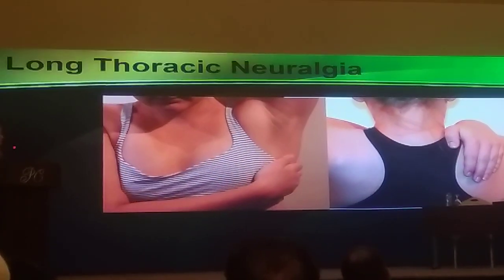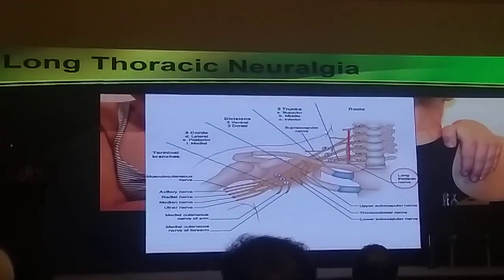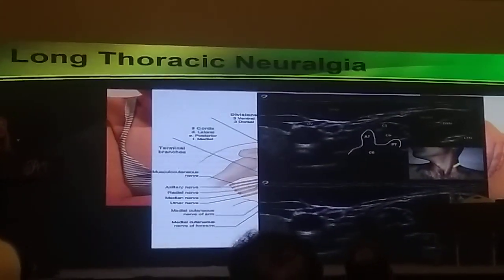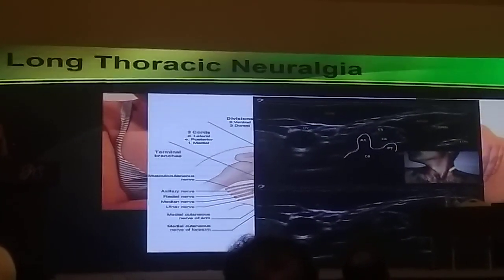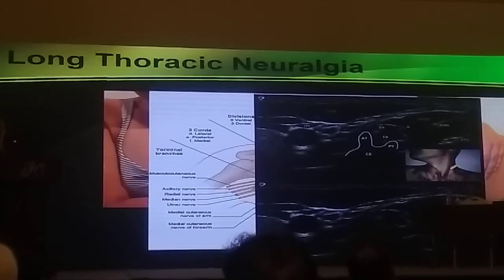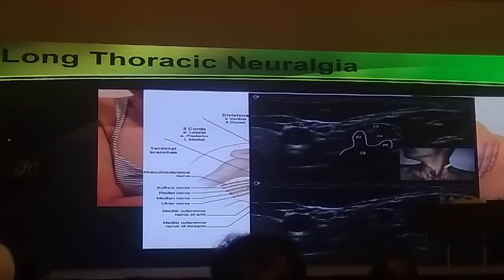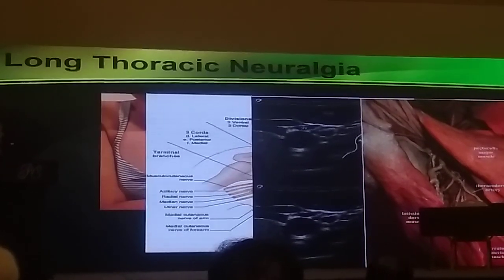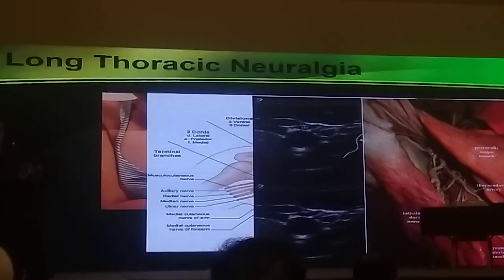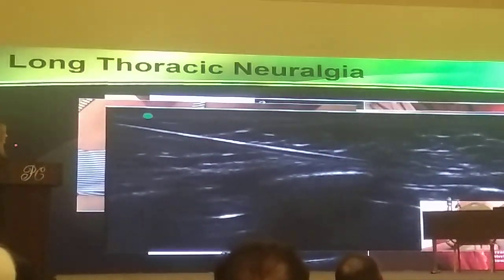For chest wall pain, the long thoracic nerve is often forgotten. It comes from the brachial plexus along with the suprascapular nerve, originating in the neck, where you can see the dorsal scapular nerve and long thoracic nerve passing through the middle scalene muscle. It passes through the axilla and gets traumatized with chest wall injuries and mastectomies. Physical exam, landmark-guided injection, and ultrasound-guided injection are the approaches.